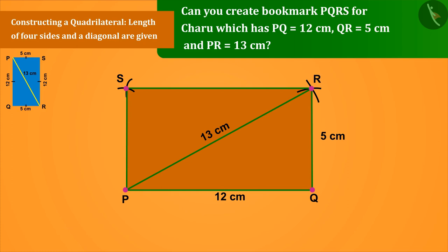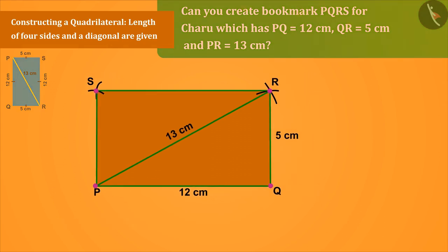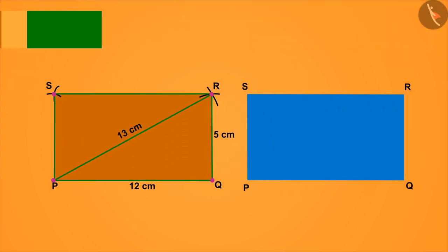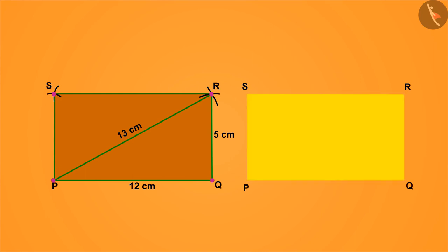And with this we get our desired quadrilateral PQRS. This is how we created the rectangle bookmark PQRS.